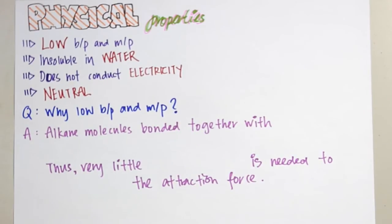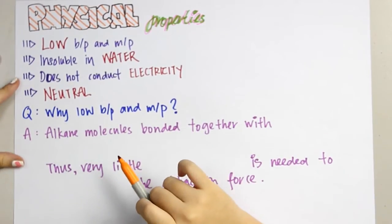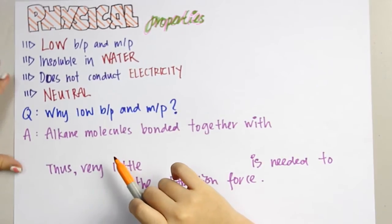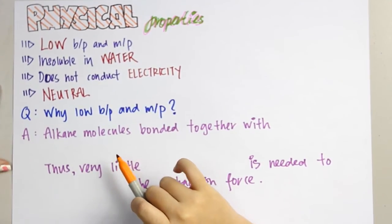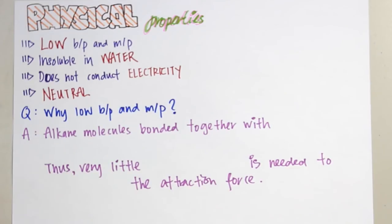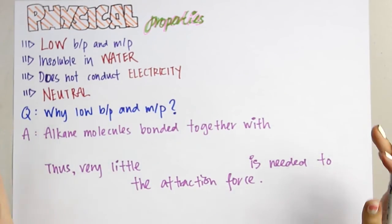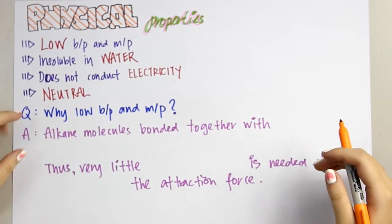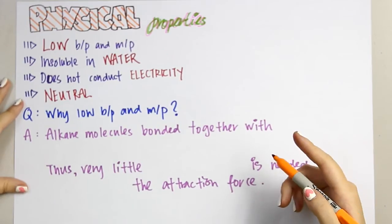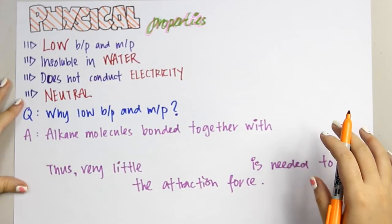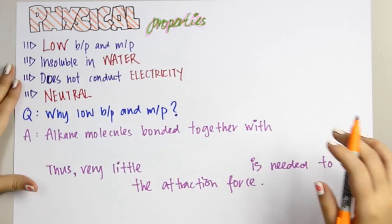The first question is: why do alkane compounds have low boiling and melting points? So we have a standard answer for this question. The first point is alkane molecules bond together with weak van der Waals or intermolecular attraction.